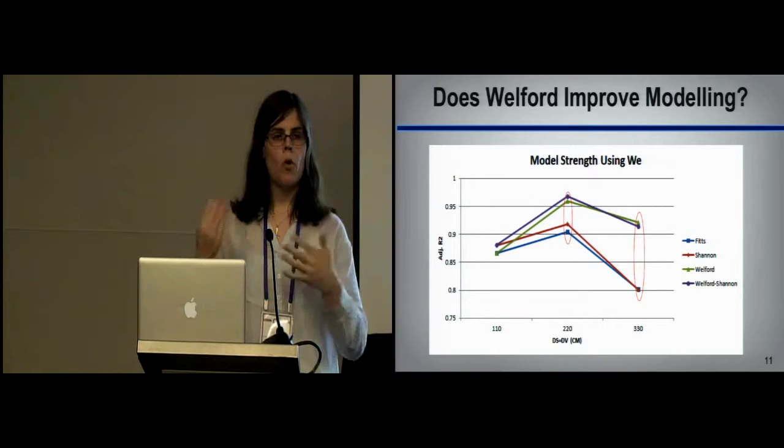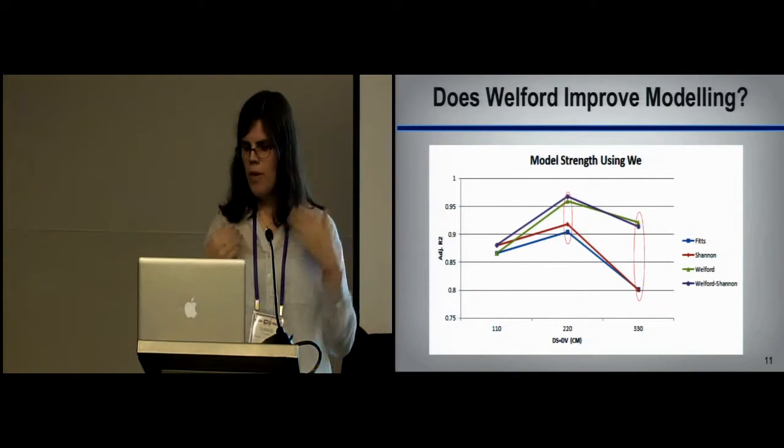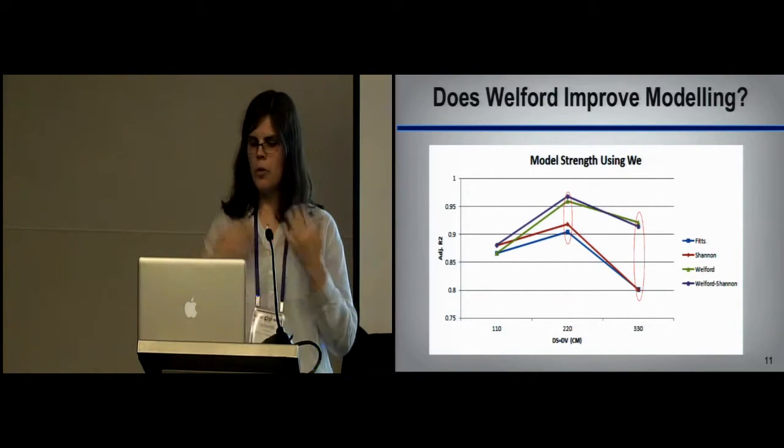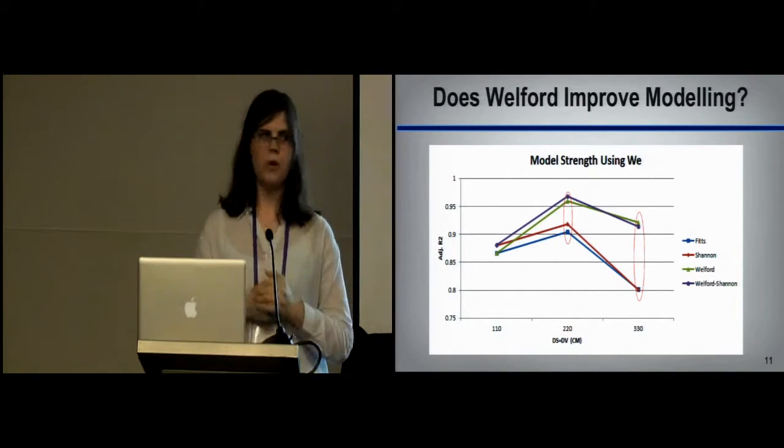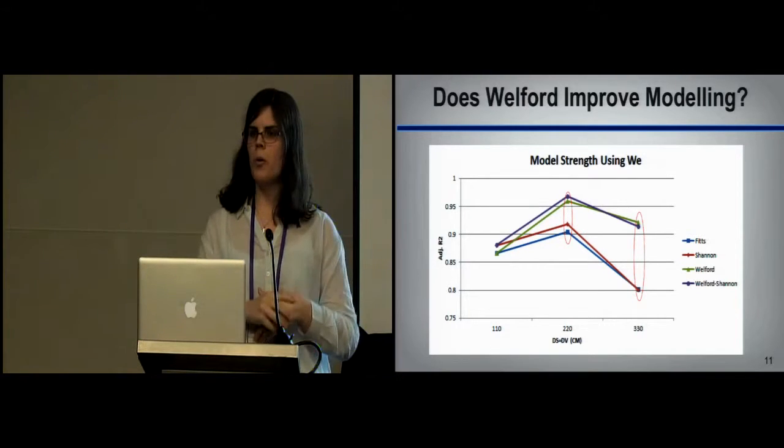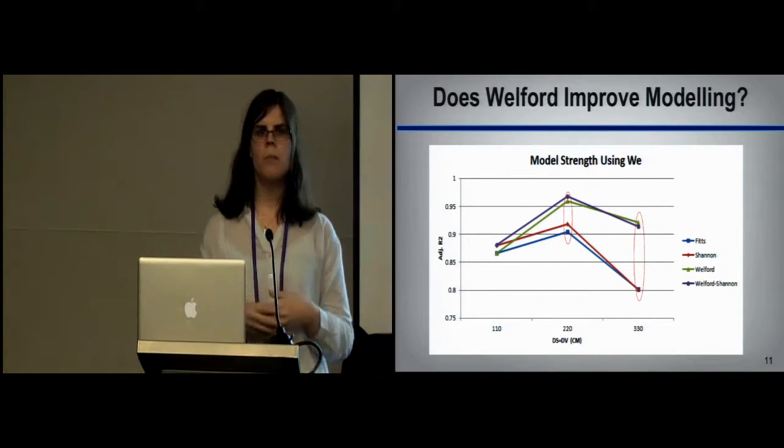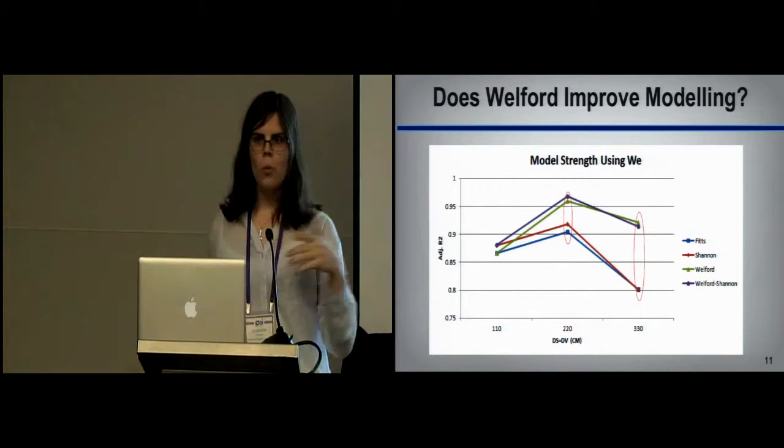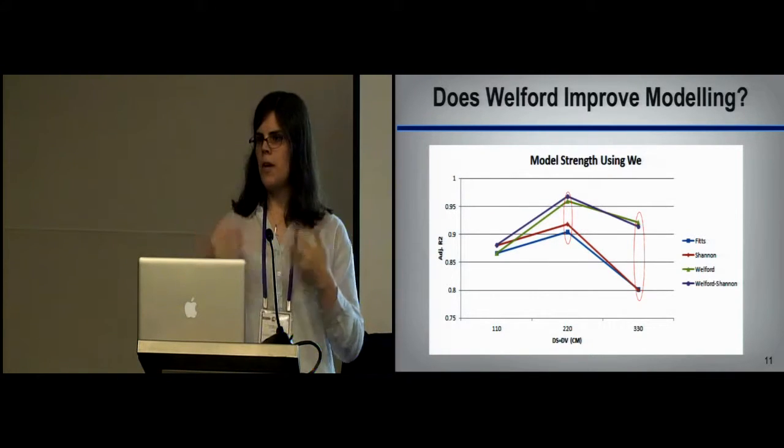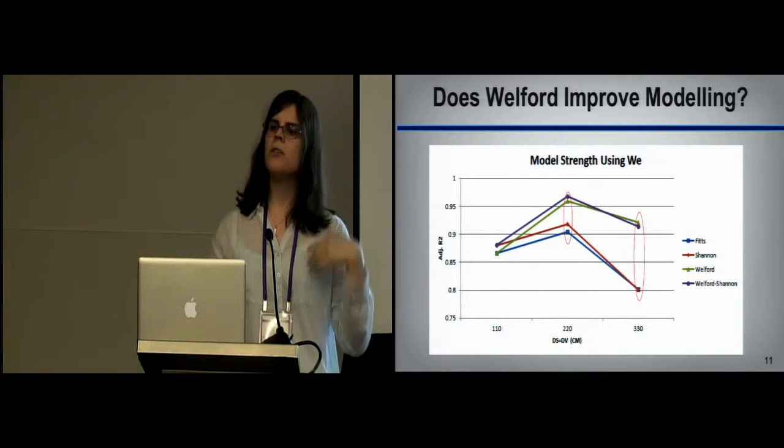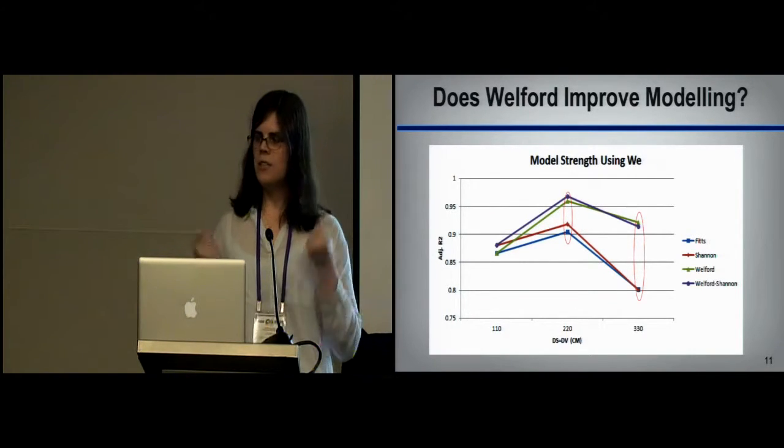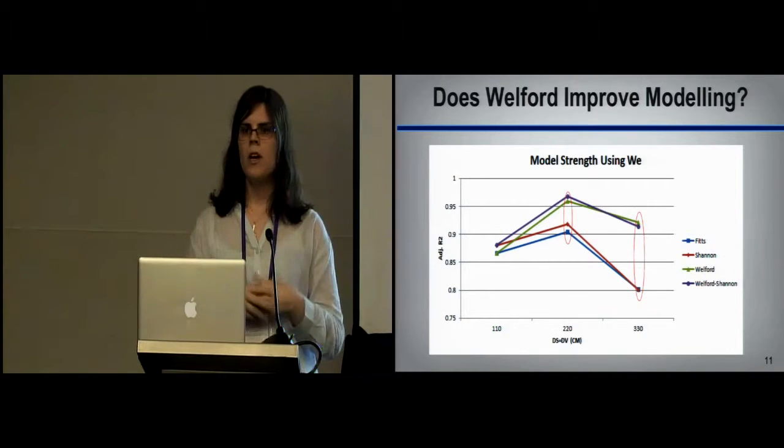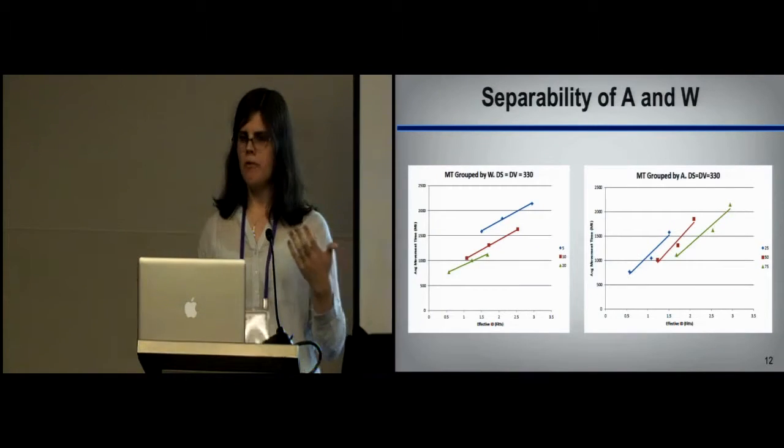So for the question of does a two-part model more robustly model pointing performance, we found sort of a trend where when you were really close to the screen at the 110 centimeter condition, you really didn't notice any difference between one-part and two-part models. So the purple and green lines are two-part. The red and blue are one part. As you got further away from the screen, Welford's model started pulling ahead more and more. There's also an important sort of programming note here. Welford's is a special case of Fitts' law. Because if K is exactly equal to one, mathematically the same model.